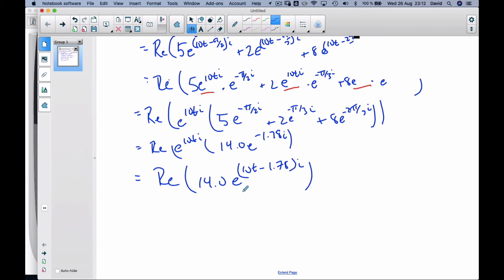So this particular complex number, I want the real part. The real part is the cosine. So it's 14 cosine(10ti - 1.78). And this is in radians.